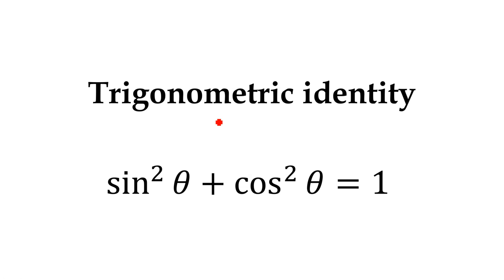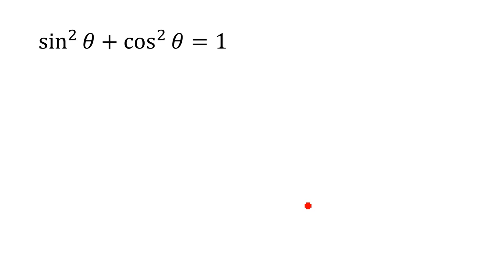Hello everyone, welcome to our channel. Today we are going to discuss a very basic trigonometric identity. We will prove that sine squared theta plus cos squared theta is equal to 1. We will use two methods to prove this.